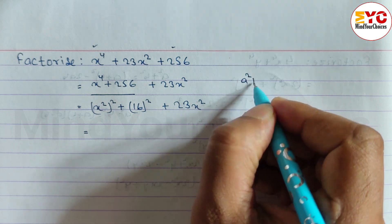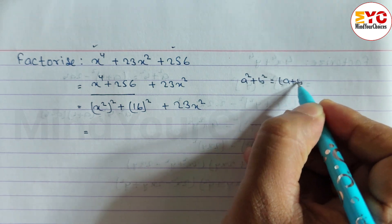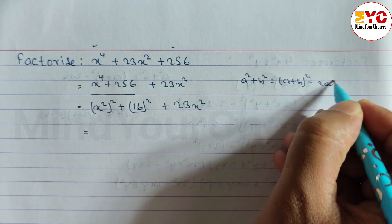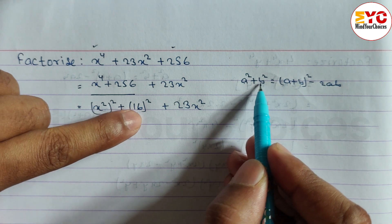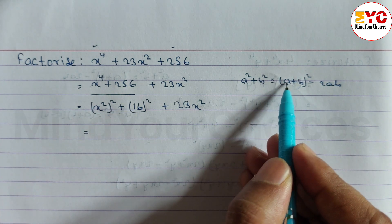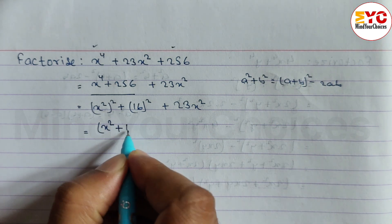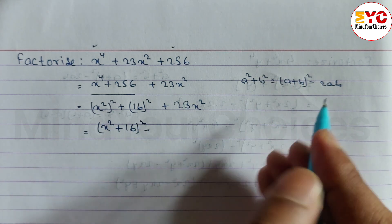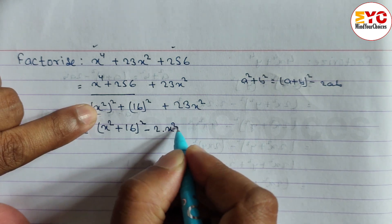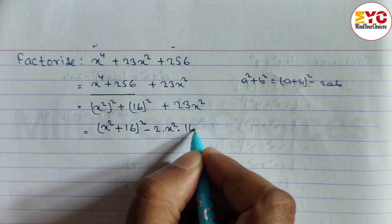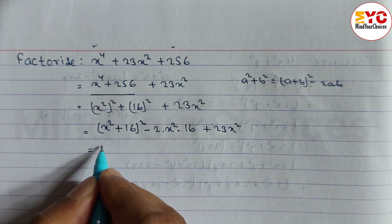This is now in the form a² + b². The formula is a² + b² = (a + b)² − 2ab. Here a = x² and b = 16, so we write (x² + 16)² − 2·x²·16, which gives (x² + 16)² − 32x², plus 23x².